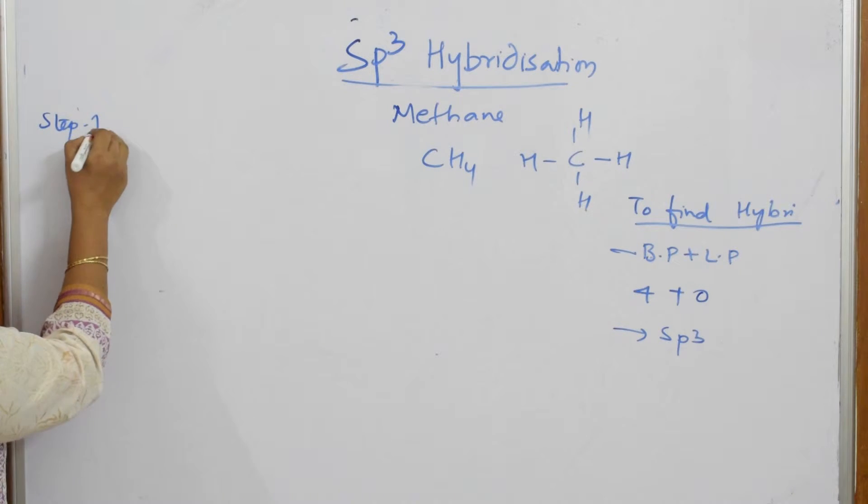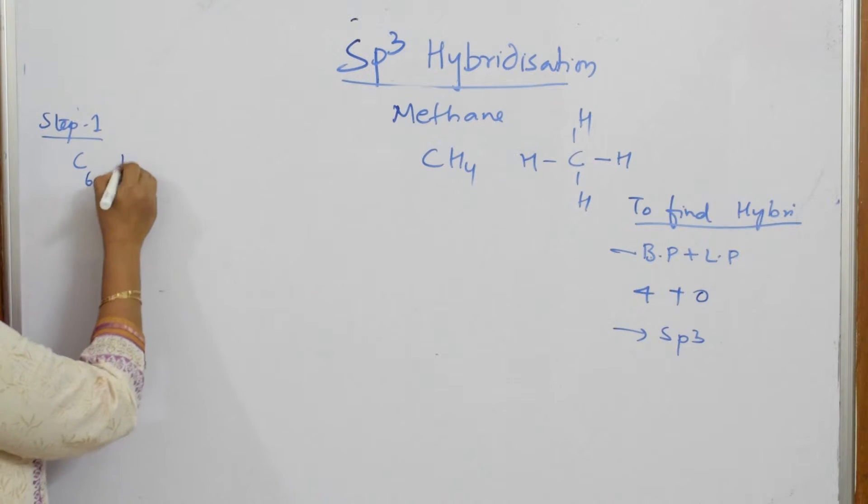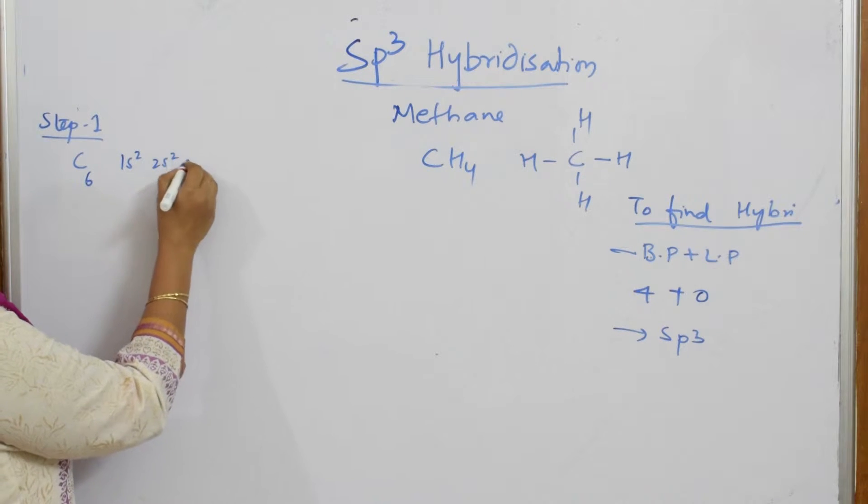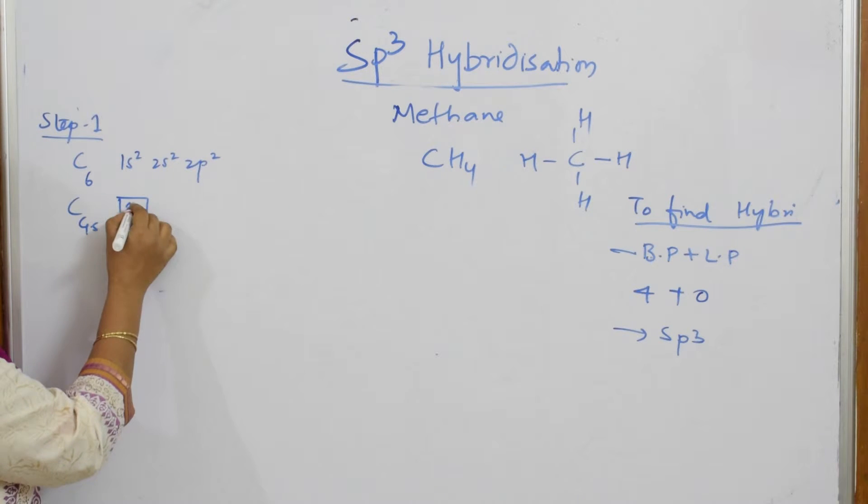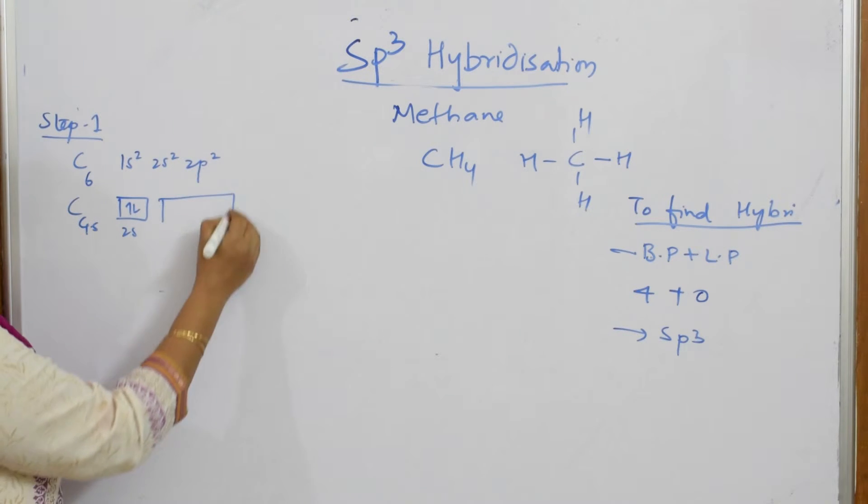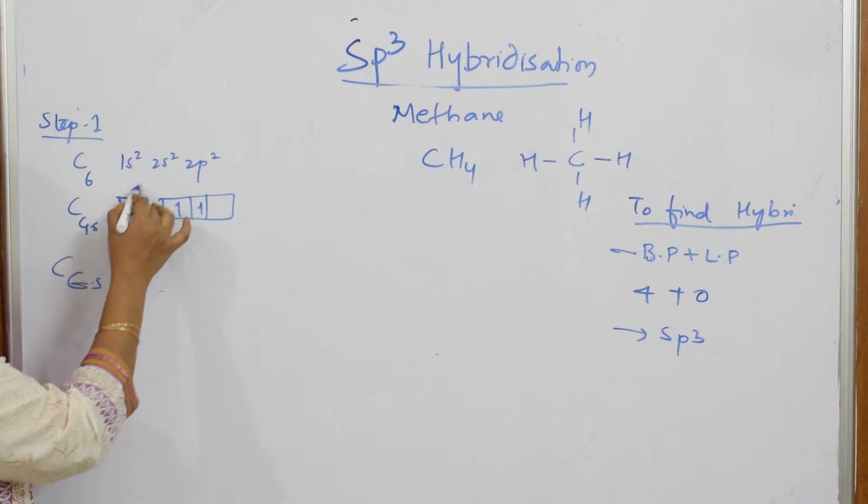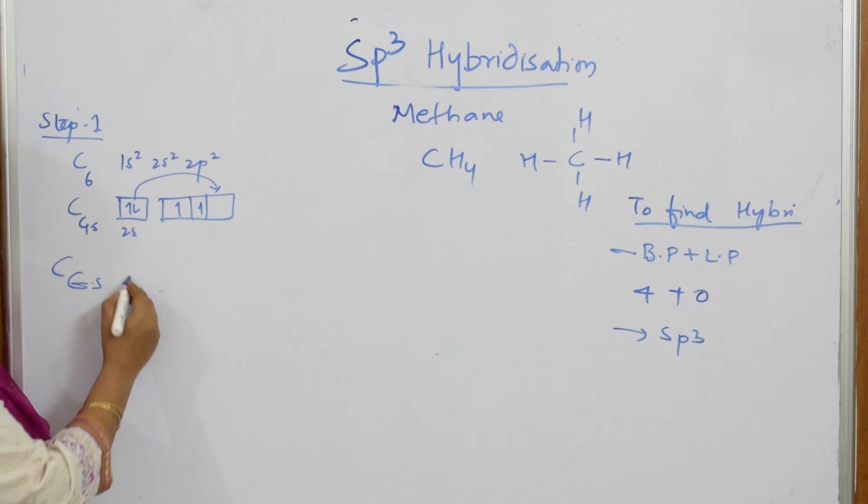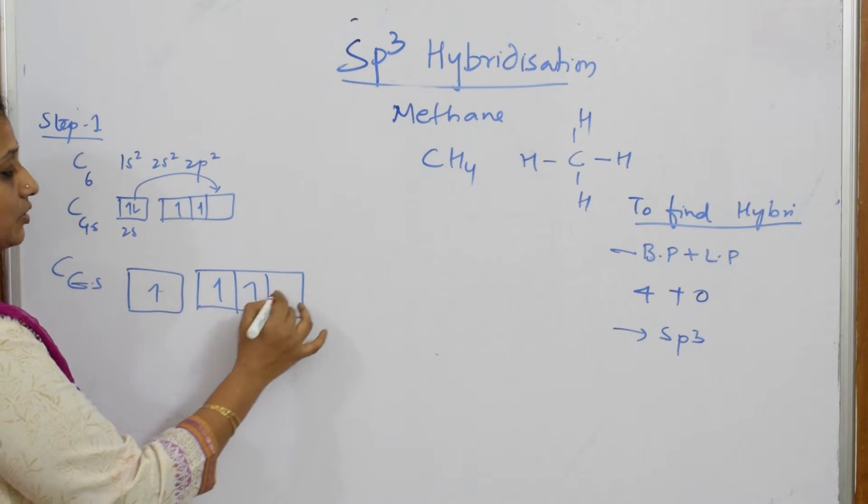What is step 1? I have to write the atomic number for carbon first, 6, right? 1S2, 2S2, 2P2. So you are going to write electronic configuration, carbon ground state. How does this look? This is 2S2. This is 2P, half and half, correct? Now carbon excited state. One electron from here will get excited to 2P.